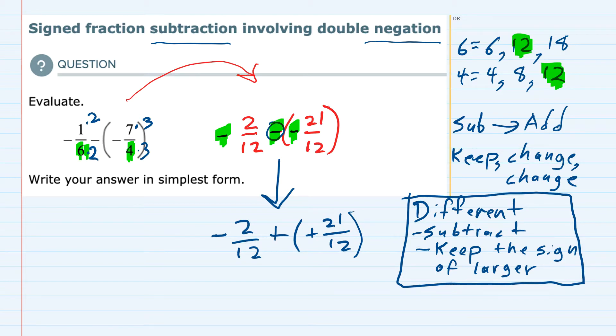Since I'm working with fractions, I'm going to go ahead and keep the denominator, 12. And then for the numerator, the signs are different. I'm subtracting and keeping the sign of the larger. So I have 21 and 2. If I subtract, I get 19.